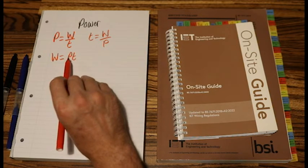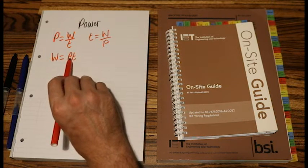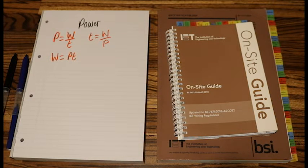Remember, in maths we leave out the multiply sign. So that actually means P times T.